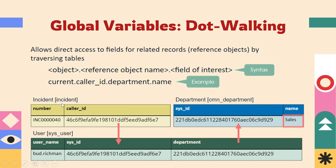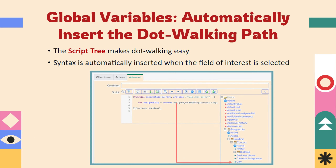For example, in the incident table, the caller ID has a sys_id, and dot walking goes to that sys_id and then walks to the name, such as 'sales.' This allows us to get the department name of the current caller on an incident. Global variables also automatically insert the dot walking path when we write any script. Many dot walking features can be utilized under business rules, and they are automatically inserted whenever we select a table in the business rule, making it easy to find what dot walking is possible on certain forms.